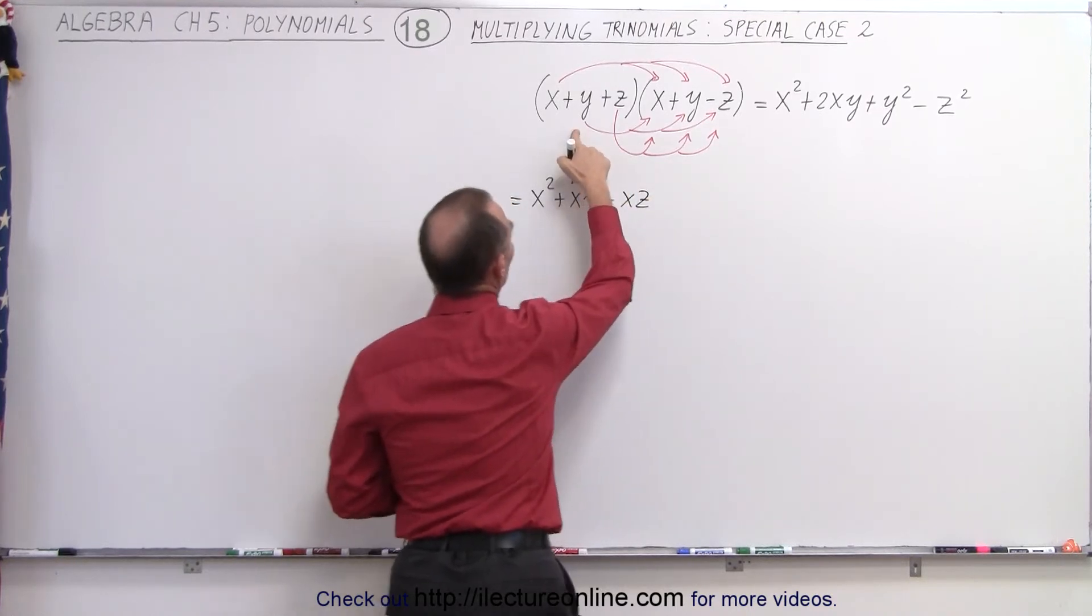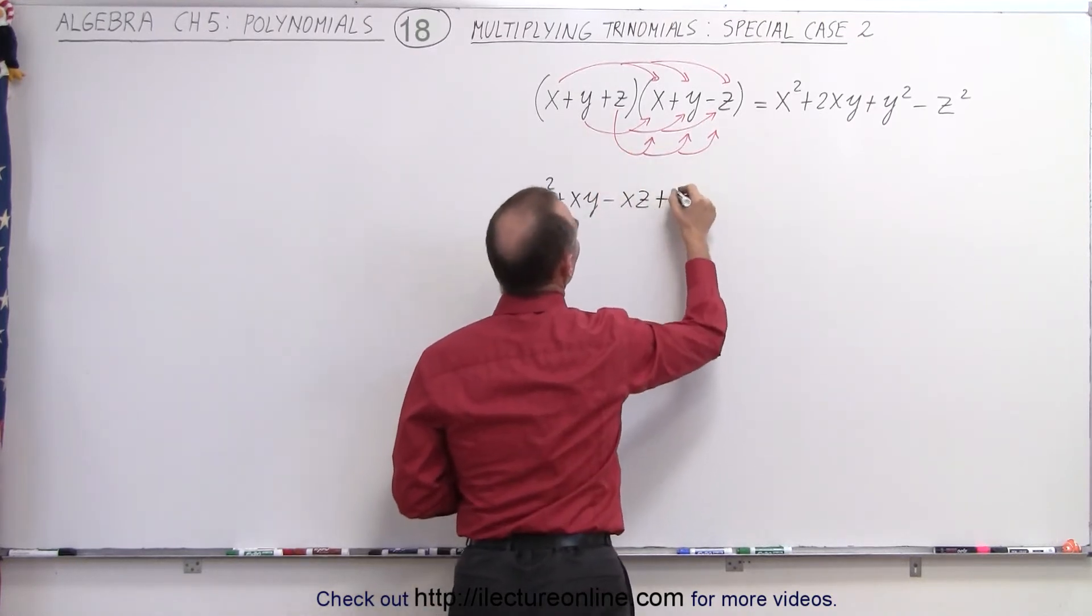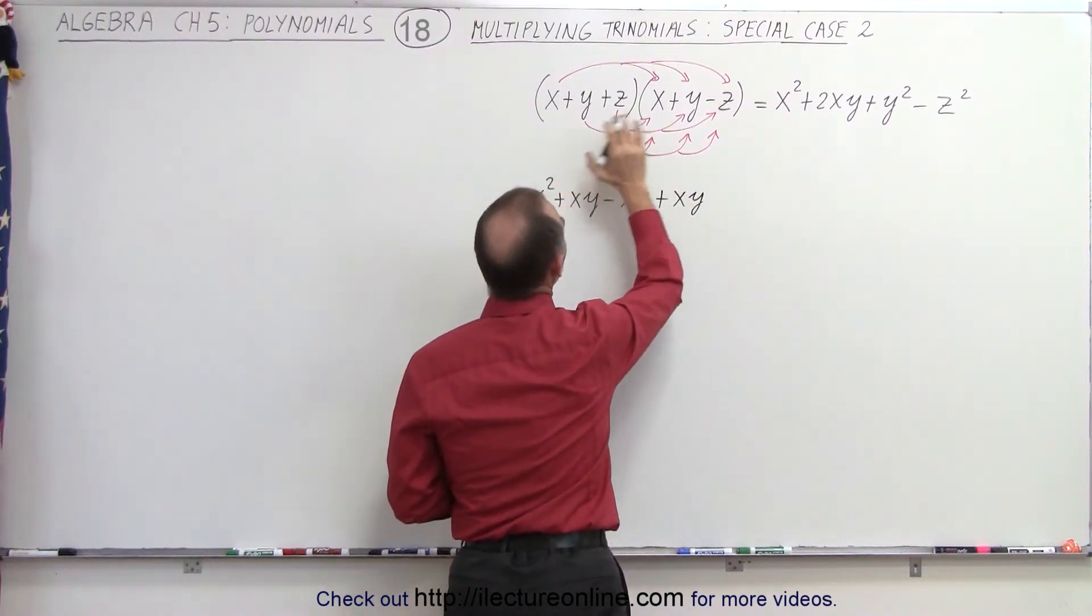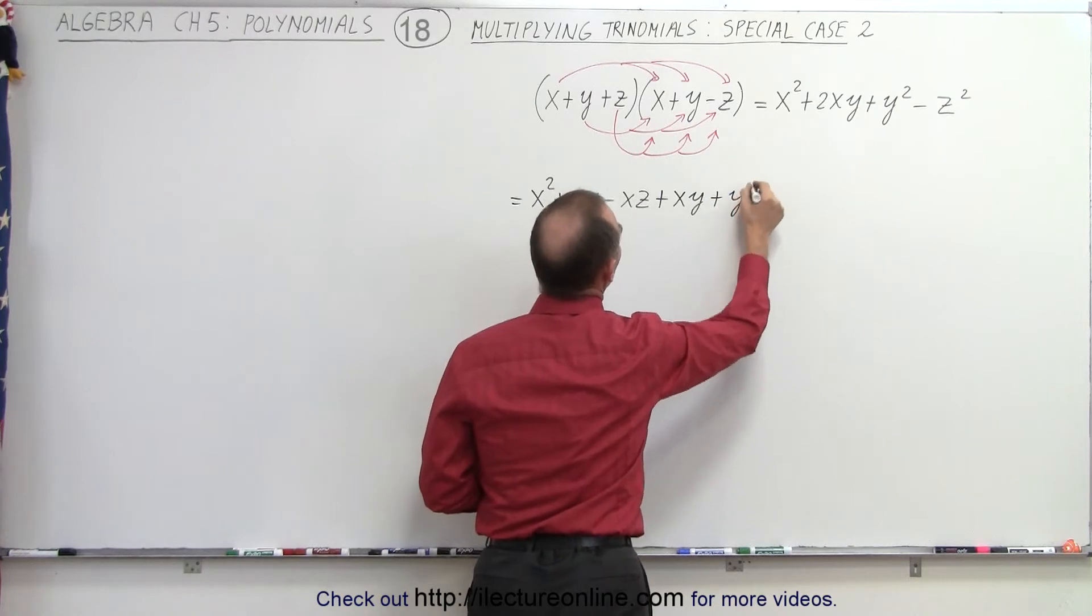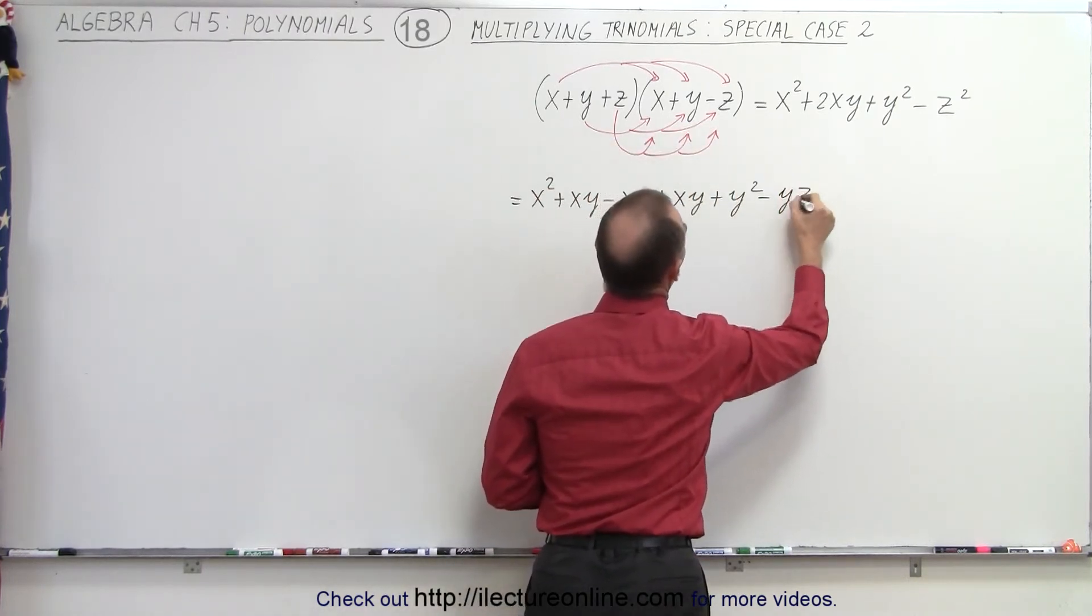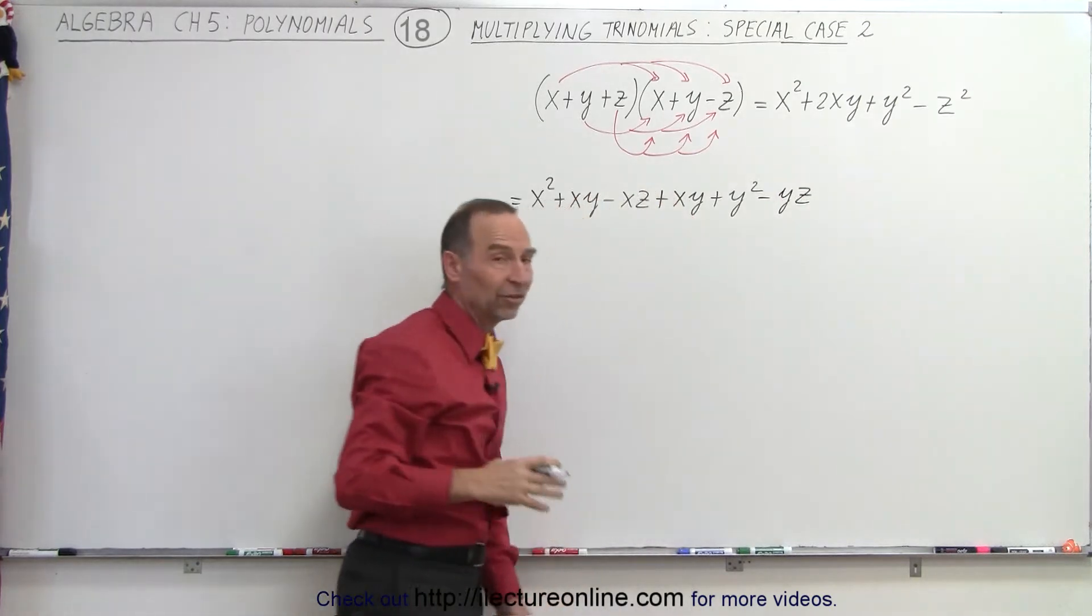Taking the second term, y times x plus xy, we write it in alphabetical order, y times y would be plus y squared, and y times a negative z is a minus yz.